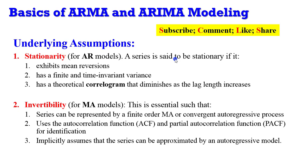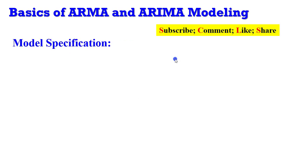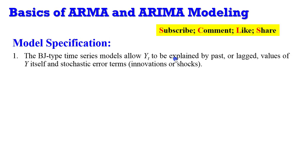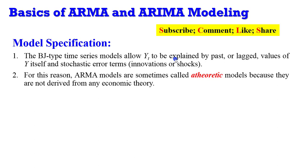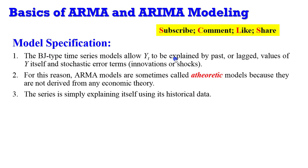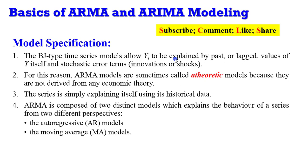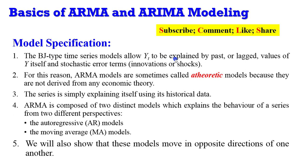ARMA models are sometimes called atheoretic models because they are not derived from any economic theory — you are simply explaining a variable using information contained in the variable itself. ARMA is composed of two distinct models: the autoregressive model and the moving average model, which explain the behavior of the series from two different perspectives and move in opposite directions of one another.